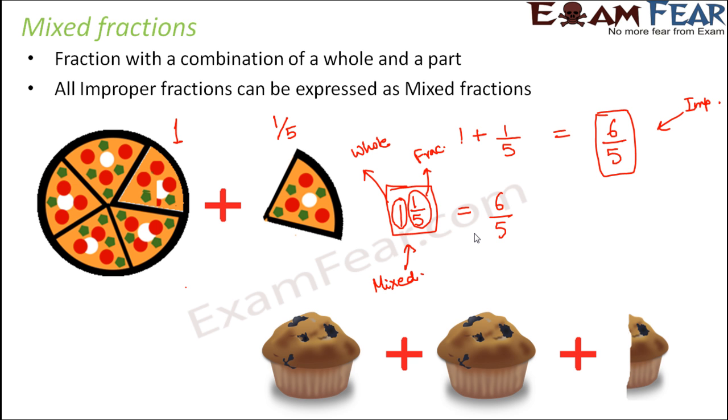Let's look at this scenario of a muffin. How many muffins do you have? How many do you see on the screen? You have one complete, plus another complete, plus a half. So you basically have one plus one plus half. One plus one plus half would be two plus half, and when you find out its sum, it is going to be five by two.